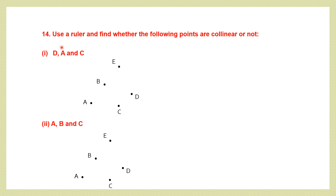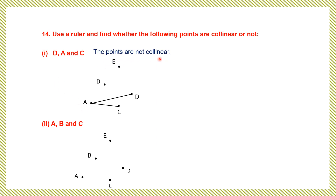Question 14: Use a ruler to find whether the following points are collinear or not. Collinear points are three or more points on the same straight line. For points D, A and C: place the ruler on D and draw a line to A, then from A to C. All three are not on a single straight line, so these points are not collinear.